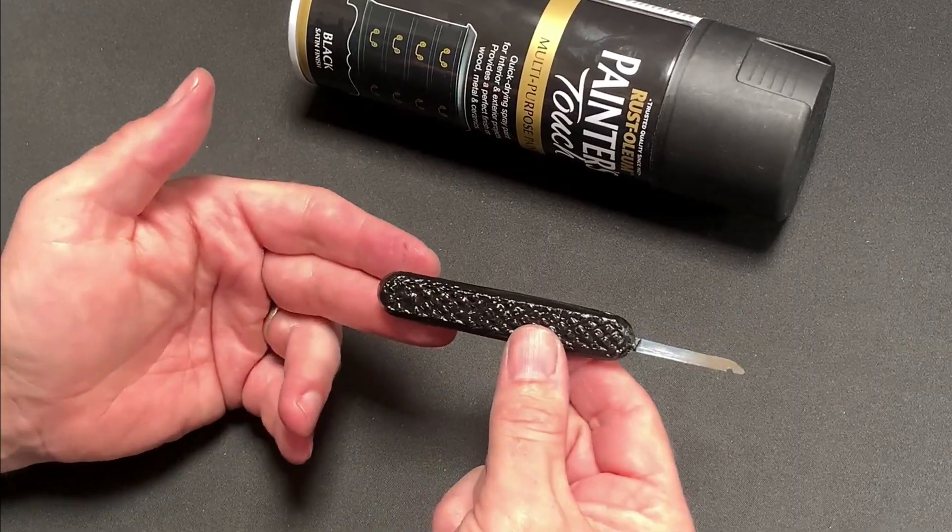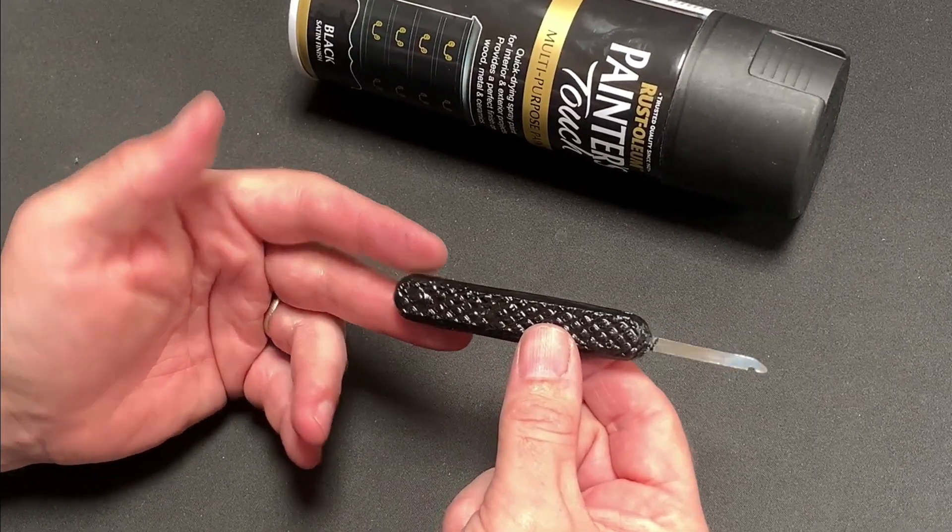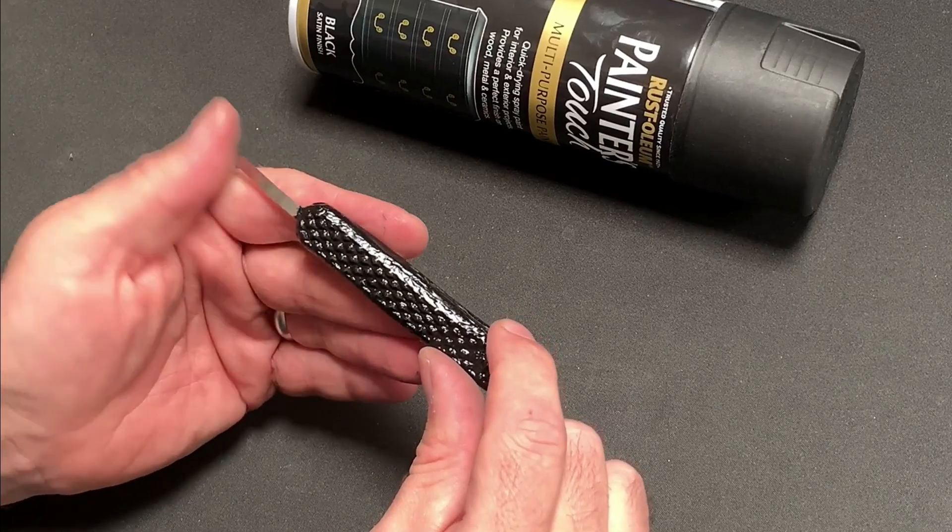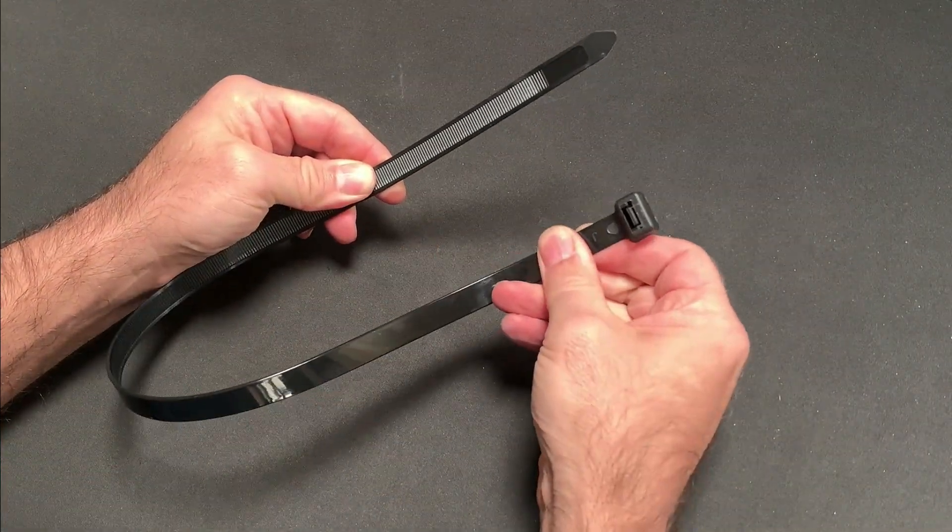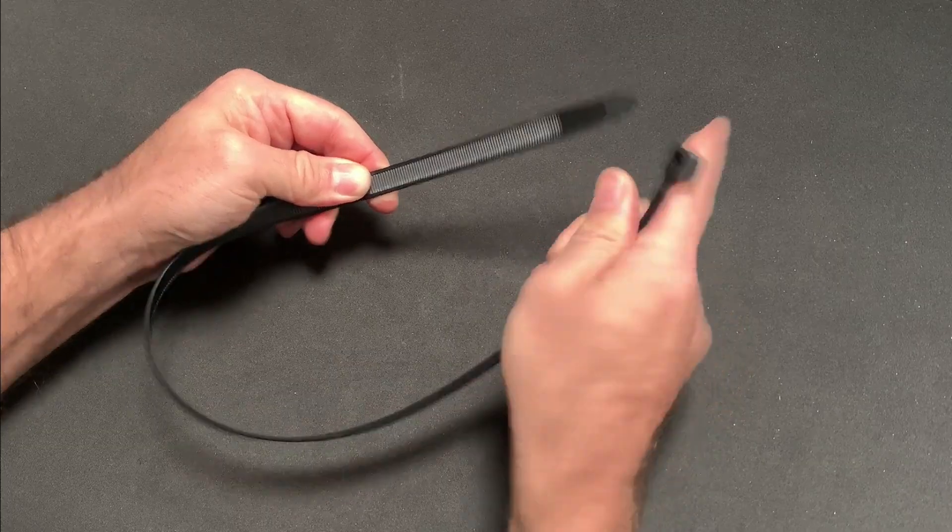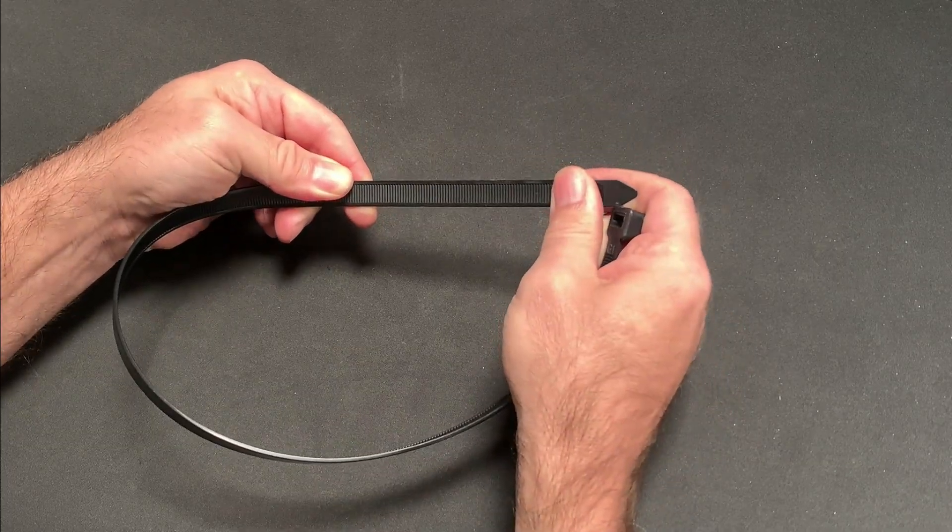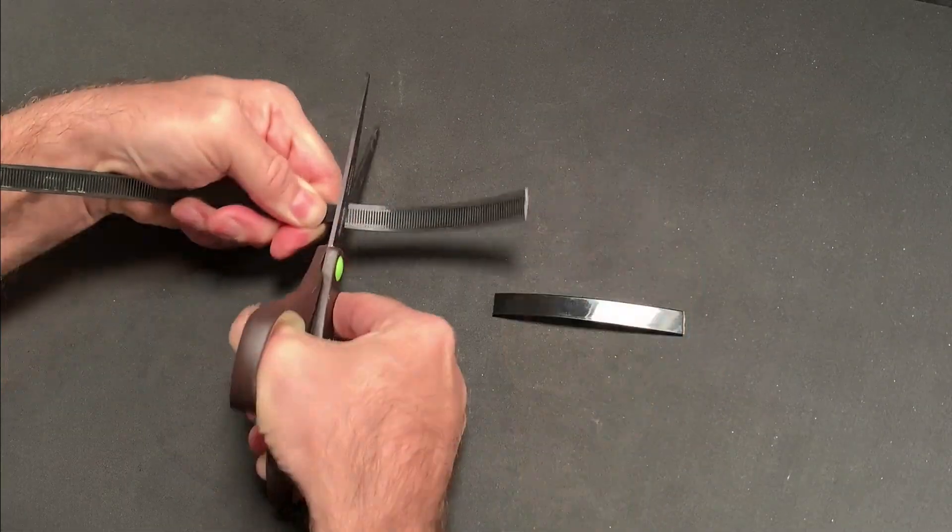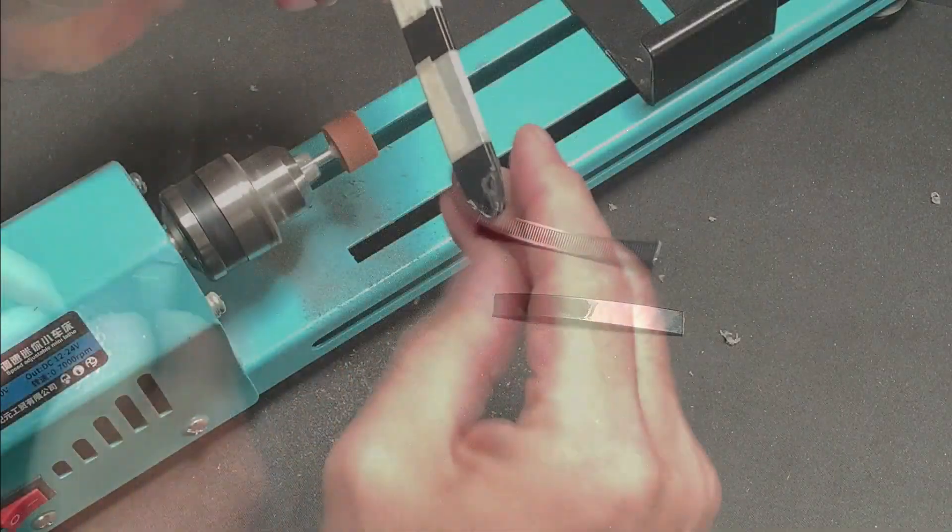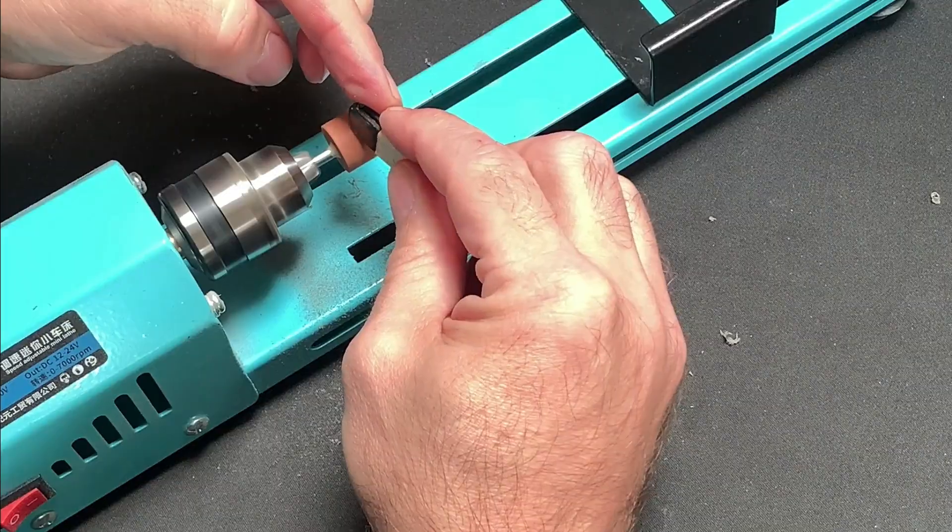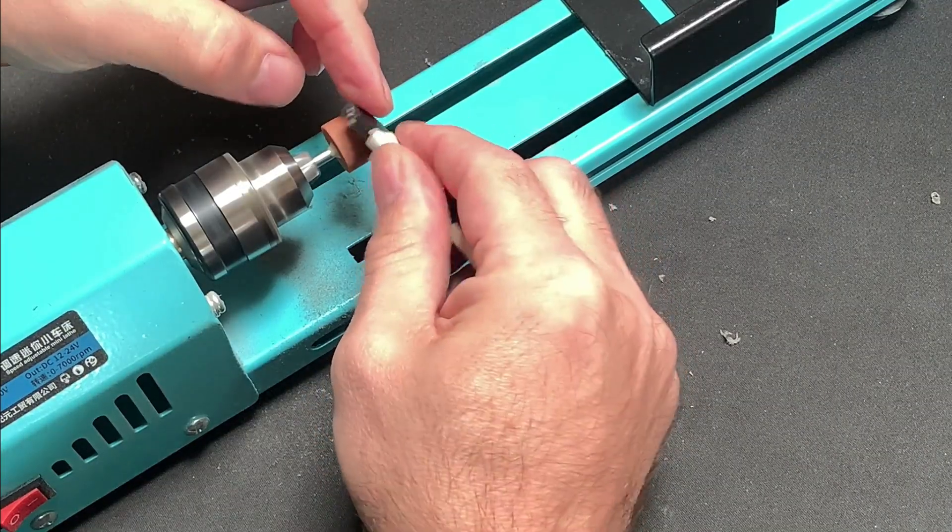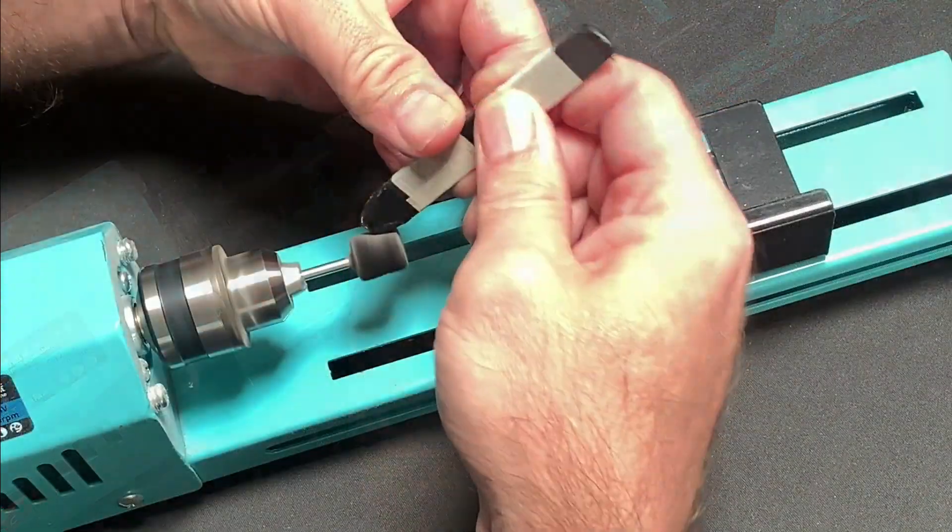However I was also keen to try an alternative handle design which I came across on Lock Noob's channel where he uses zip ties to create some pick scales which I thought was a great idea. In this case I used 12mm wide plastic ties and cut two 8cm sections which I taped together and then shaped on the mini lathe.